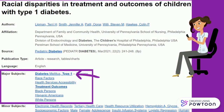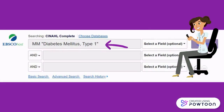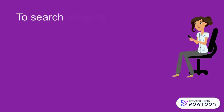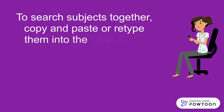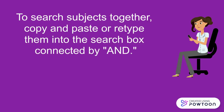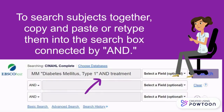If I click on the subject term Diabetes mellitus Type 1, it redirects to the main CINAHL search with my new term entered into the search box. To search subjects together, copy and paste or retype them into the search box connected by AND. Here I've added my keyword TREATMENT to the search for Diabetes mellitus Type 1, and connected them with AND in all caps.